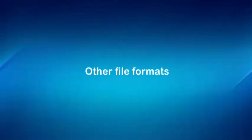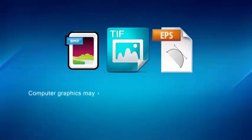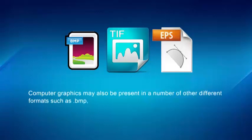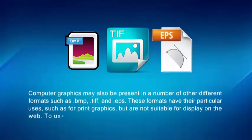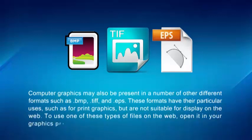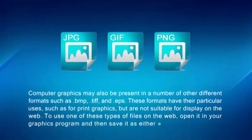Other file formats. Computer graphics may also be present in a number of other different formats such as .bmp, .tif, and .eps. These formats have their particular uses, such as for print graphics, but are not suitable for display on the web. To use one of these types of files on the web, open it in your graphics program and then save it as either a JPEG, GIF, or PNG.